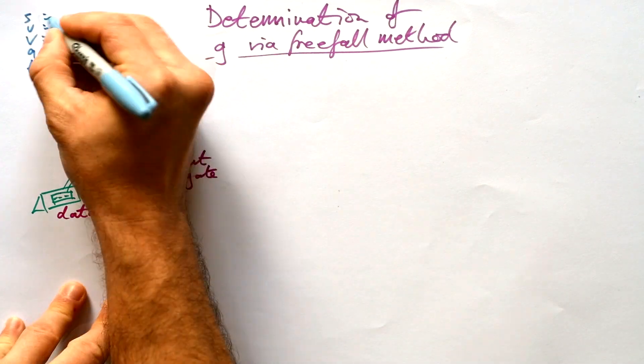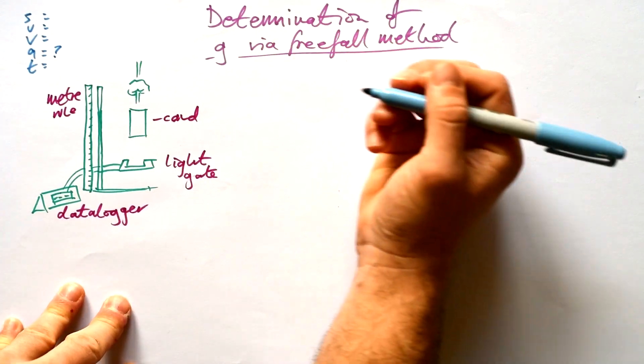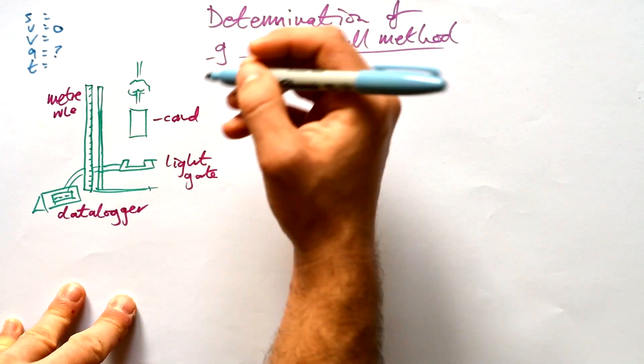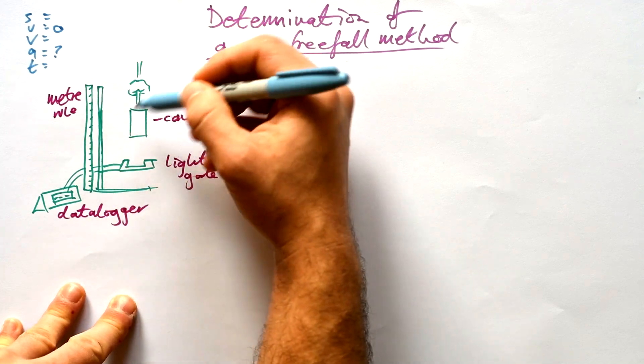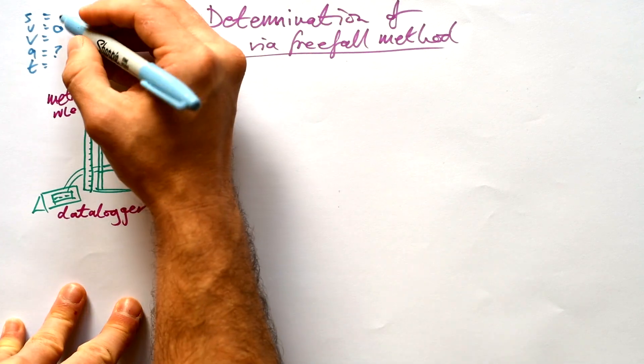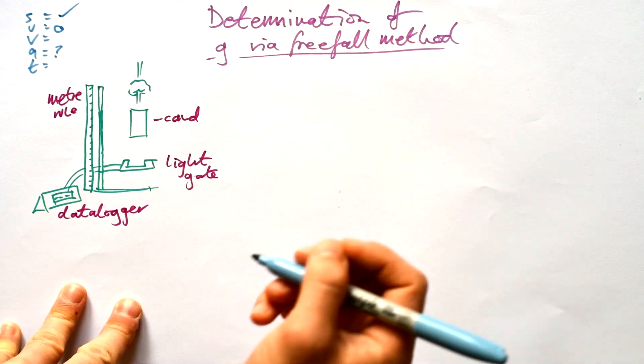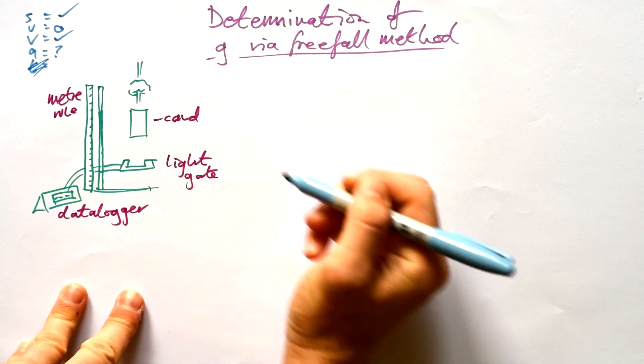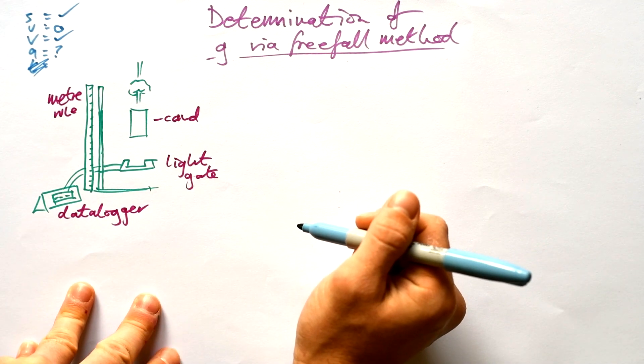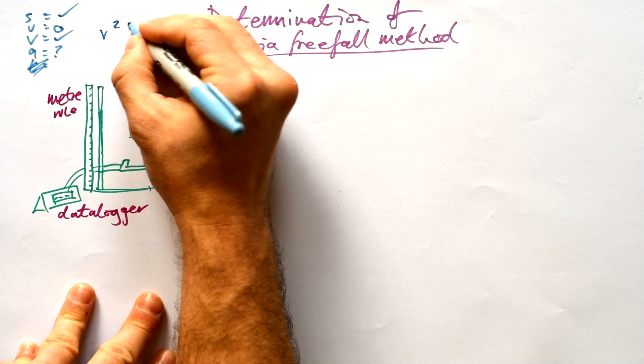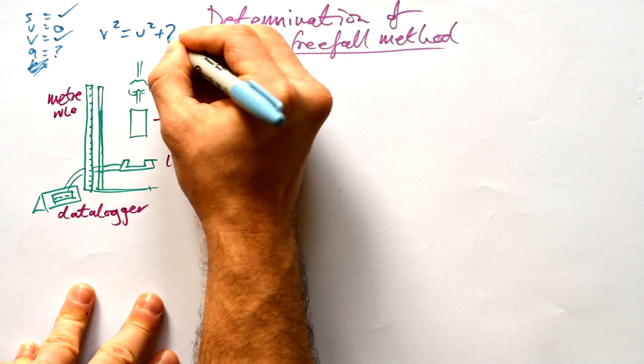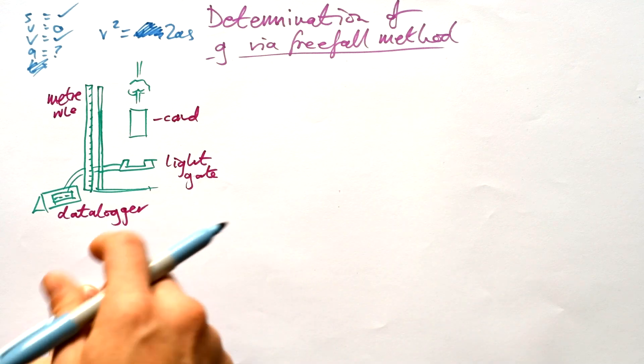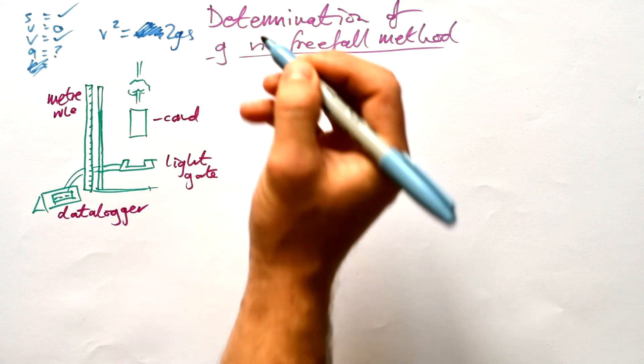Let's have a think about SUVAT real quick. We're obviously trying to find A, acceleration, that's our g. If we're dropping it, then we know that U is zero. We can know S because we can see how far it's dropped from where we drop it to where it goes through the light gate. And from the light gate, we can find out the final speed. So we're not concerned about T, we want an equation that has no T in it. That is V squared equals U squared plus 2AS. Because U is zero, U squared disappears. So it's just V squared equals 2AS. I'm going to change the A to a g.